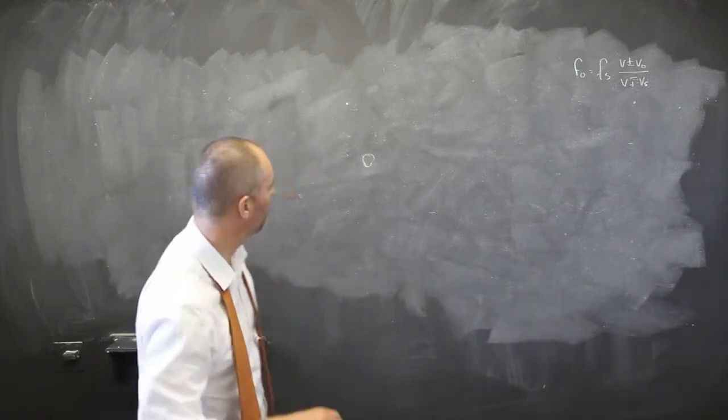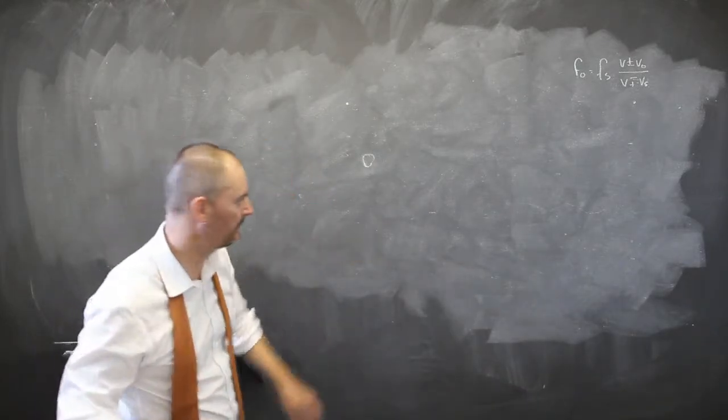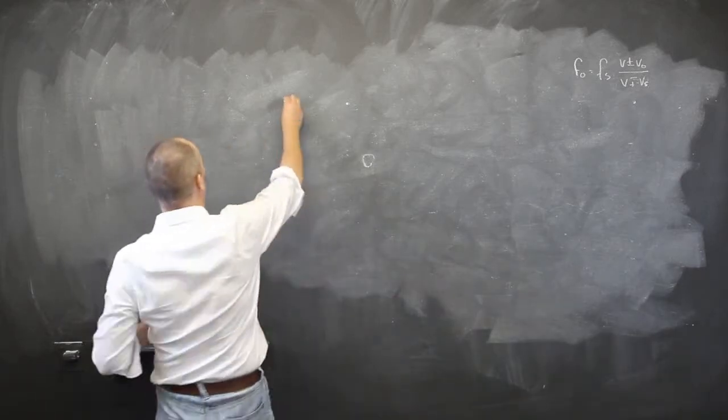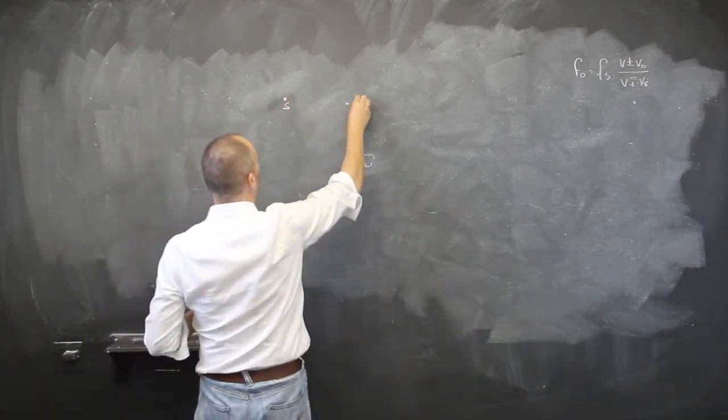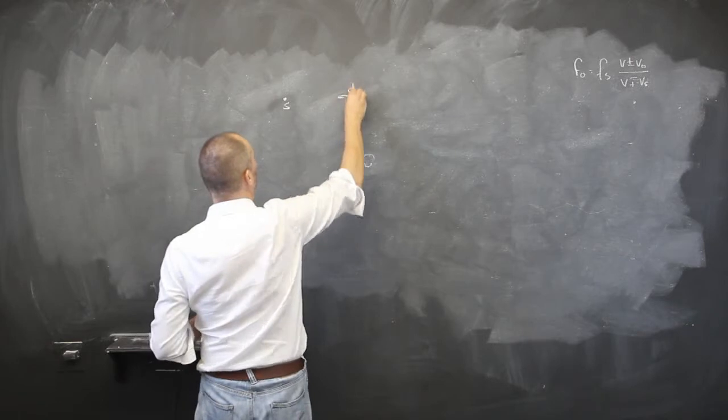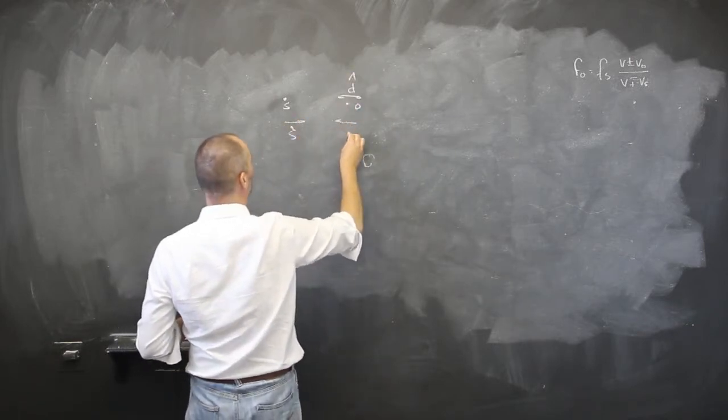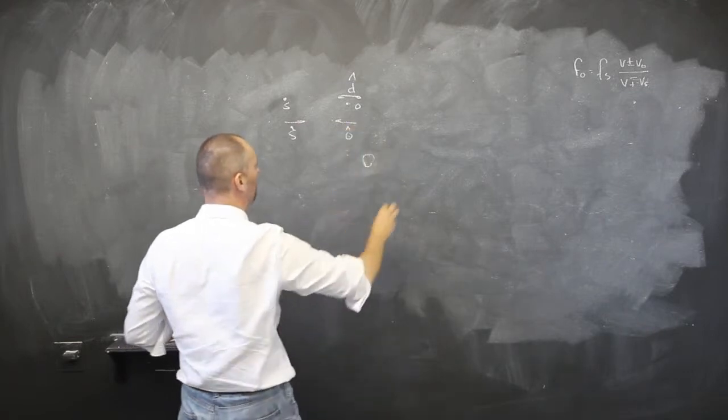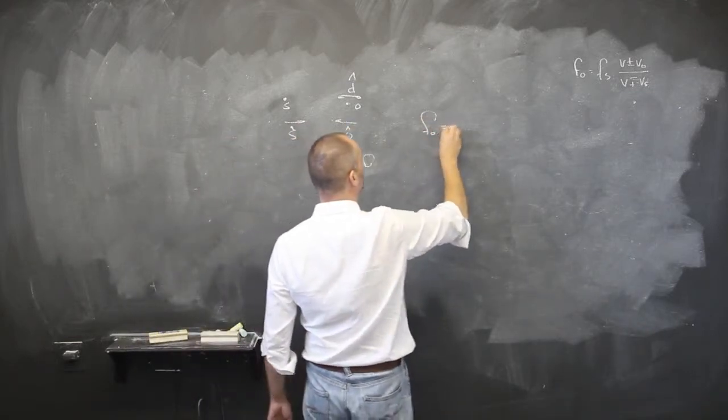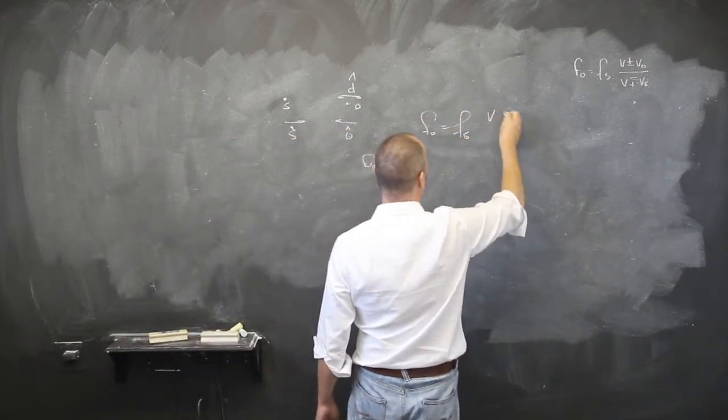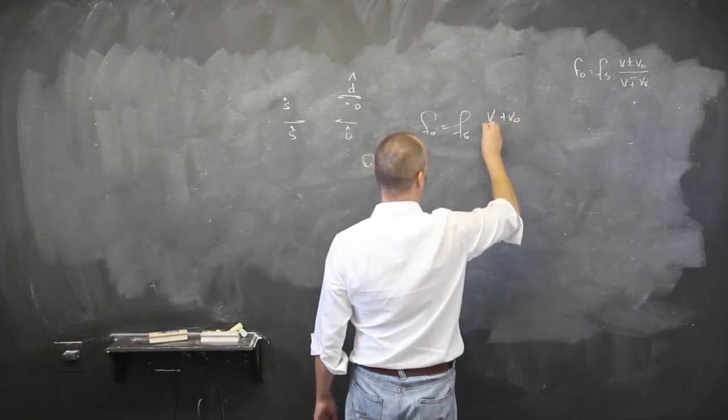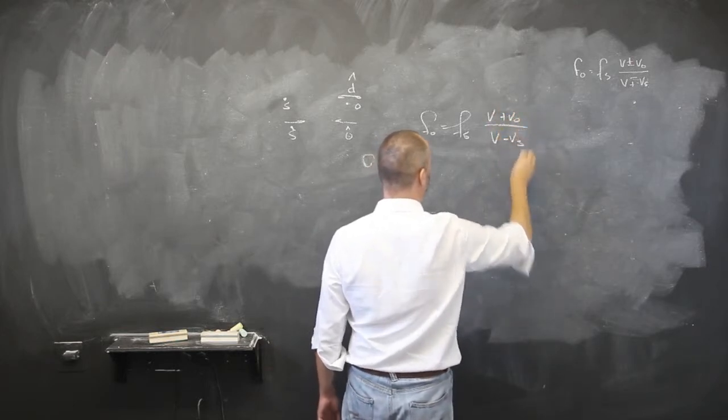Now, another problem that I want to do - just to explain the concept. Once again, if we do have a source and an observer, it's our unit direction vector. If they move towards each other, we're going to be left with frequency of the observer equals frequency of the source, and we have the velocity plus the velocity of the observer, and the velocity minus the velocity of the source.